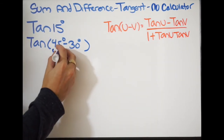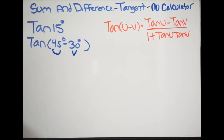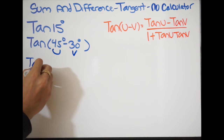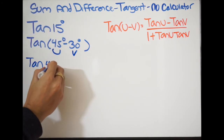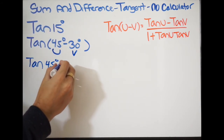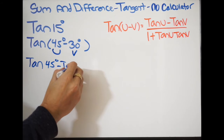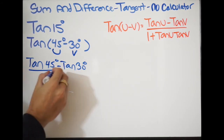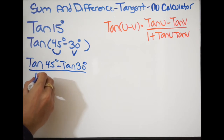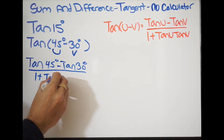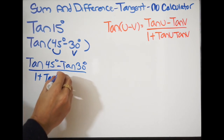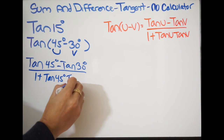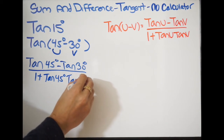Remember, 45 degrees is going to be my U, and 30 degrees is my V. So we're going to go ahead and rewrite it like this. We get tangent U, which is 45 degrees, minus tangent of 30 degrees, and then we have 1 plus tangent of 45 degrees times tangent of 30 degrees.